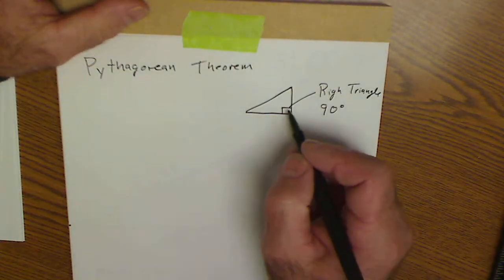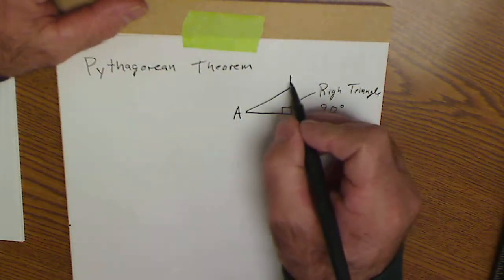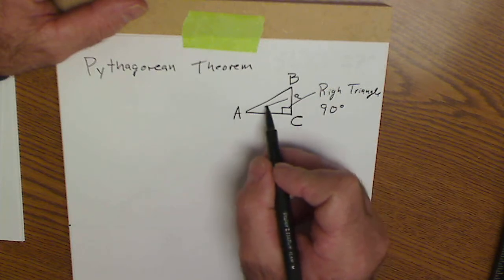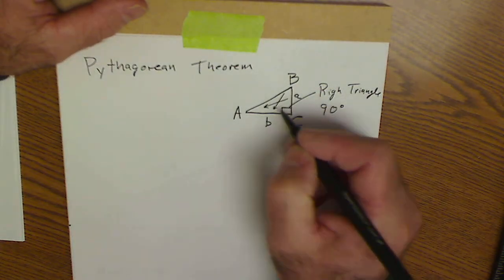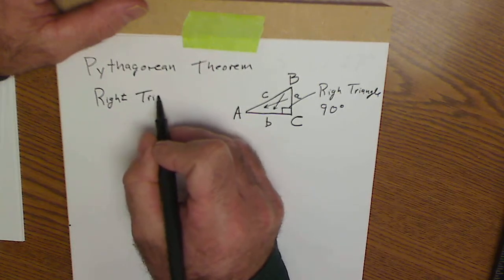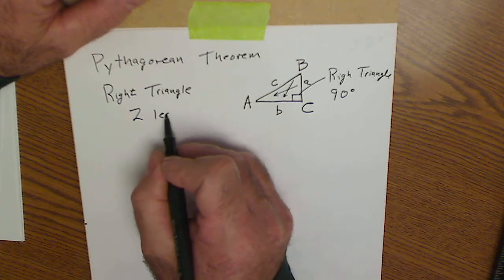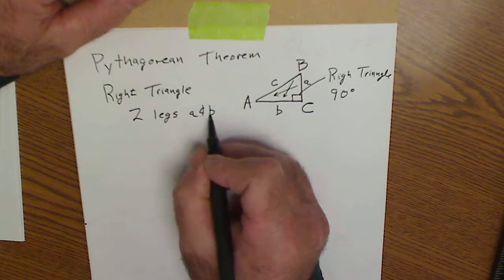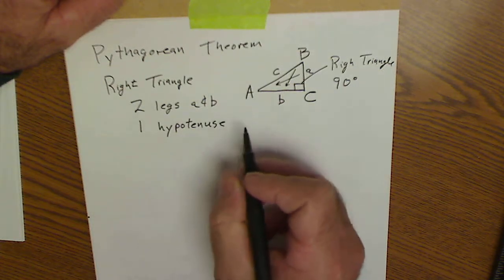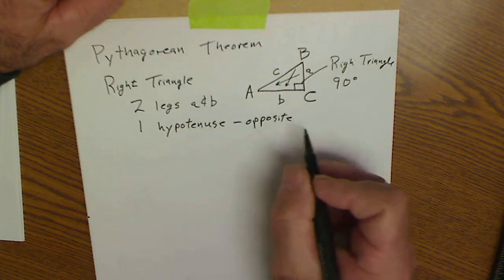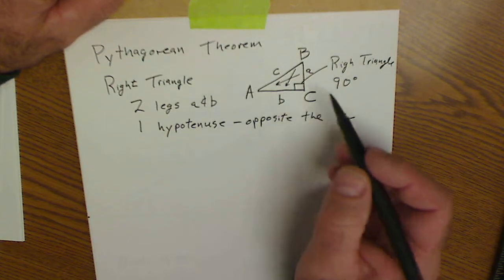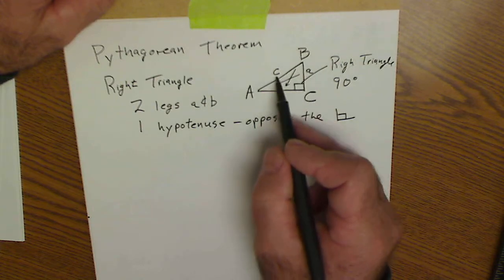Just a couple of things about triangles. You use a capital letter for the measure of an angle and a lowercase letter for the length of the side opposite that angle. So if this is side A, it is opposite angle A. This is side B, opposite angle B, and then this is side C. In every right triangle there are two legs — in this case A and B — and it's common to use A and B for the legs. Then there's one hypotenuse, and the hypotenuse is always opposite the right angle. It's common to call that right angle C with the hypotenuse lowercase C.